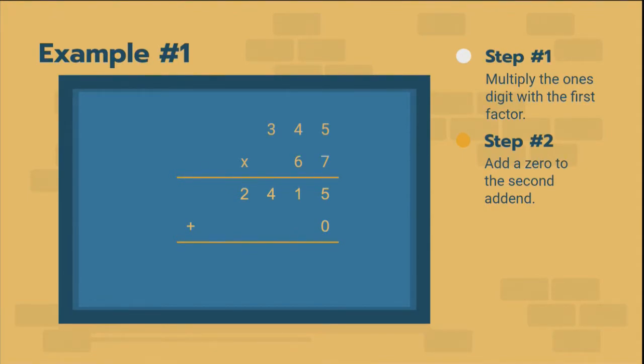So you've got to make sure you put that zero. If you don't, you're not going to get the right answer. Your numbers will be stacked incorrectly. And when you add them, you'll get a totally different answer.